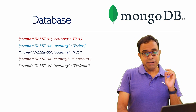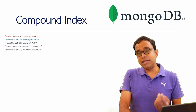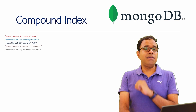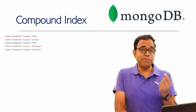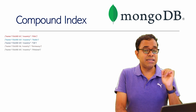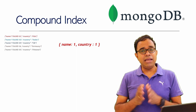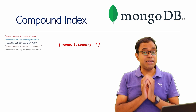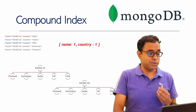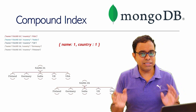Before we see the database in MongoDB Compass, let me explain how a compound index will look. Since there are only two fields, we can create a compound index on name and country. If I create a compound index with name ascending and country ascending, MongoDB will first create a sorted index by name, and within each name there will be country in sorted form.